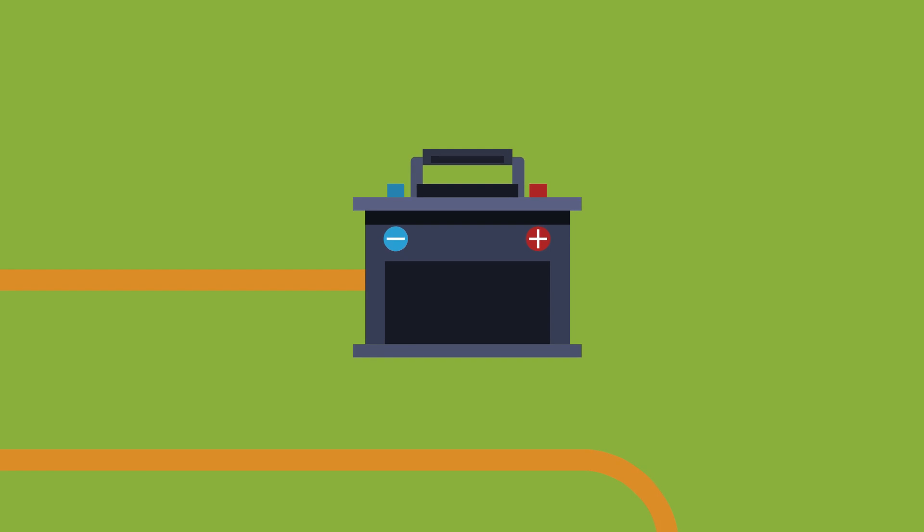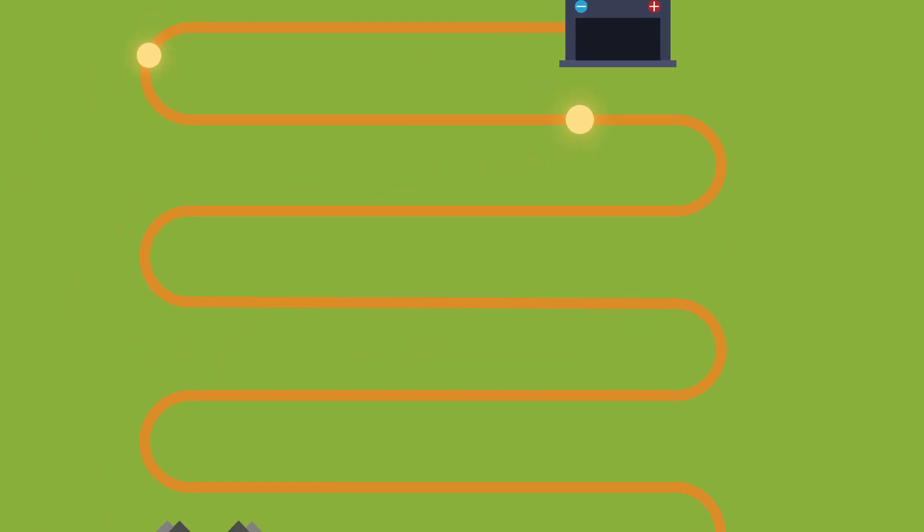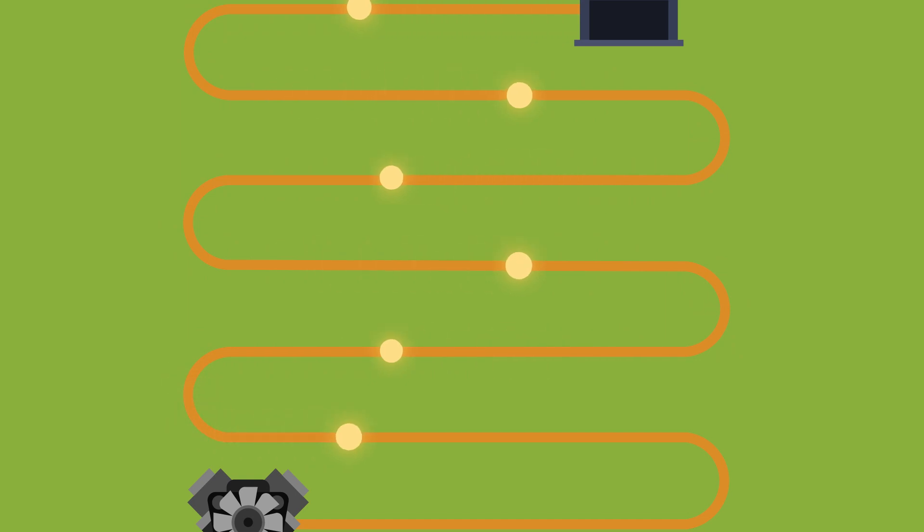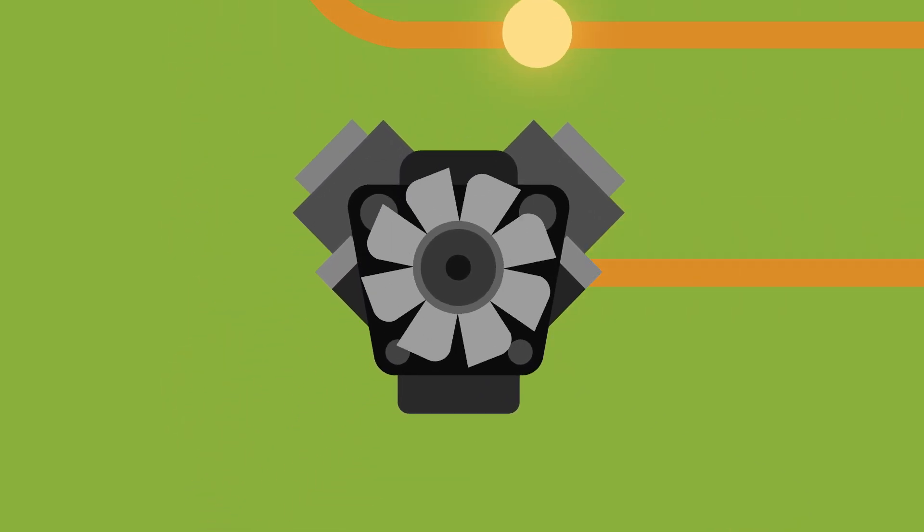An electrical current can also transfer energy from one store to another. In this example, we've got the chemical store of the battery, and it's being transferred to the kinetic store of the motor spinning round by the electrical current.